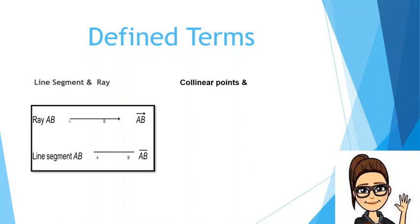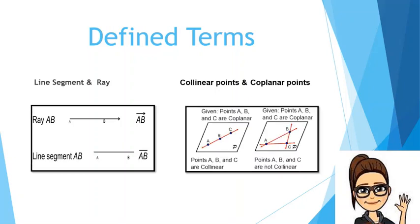Collinear points are points that lie on the same line, while coplanar points are points that are on the same plane. In the figures given, points A, B, and C are coplanar in both figures because they are on the same plane, plane Q. However, points A, B, and C in the first figure are also collinear because they lie on the same line, while in the second figure they are not collinear because they are not on the same line.